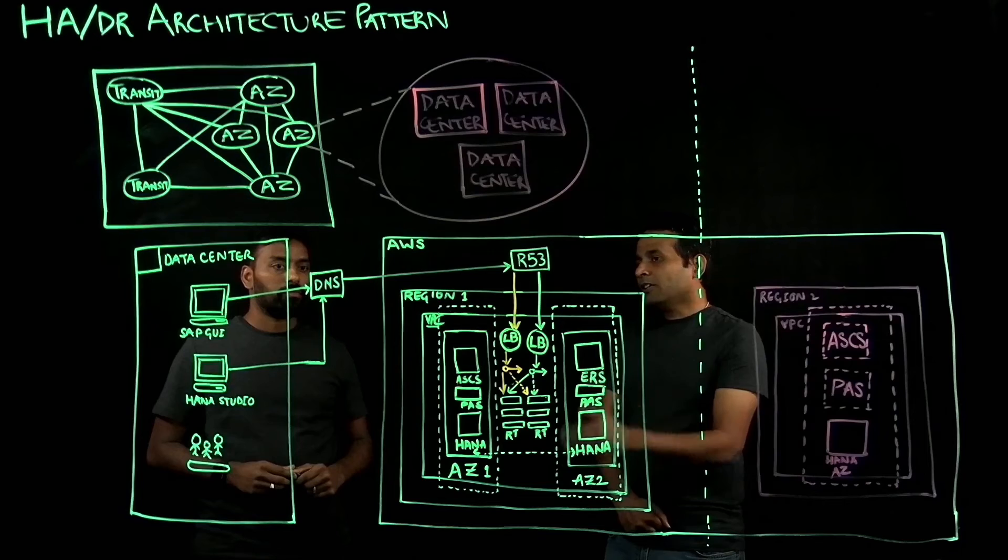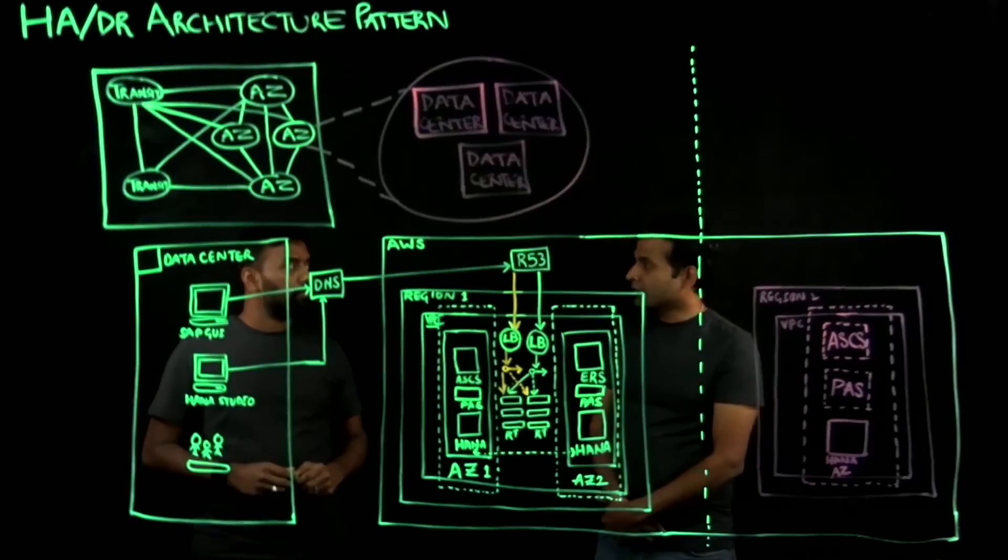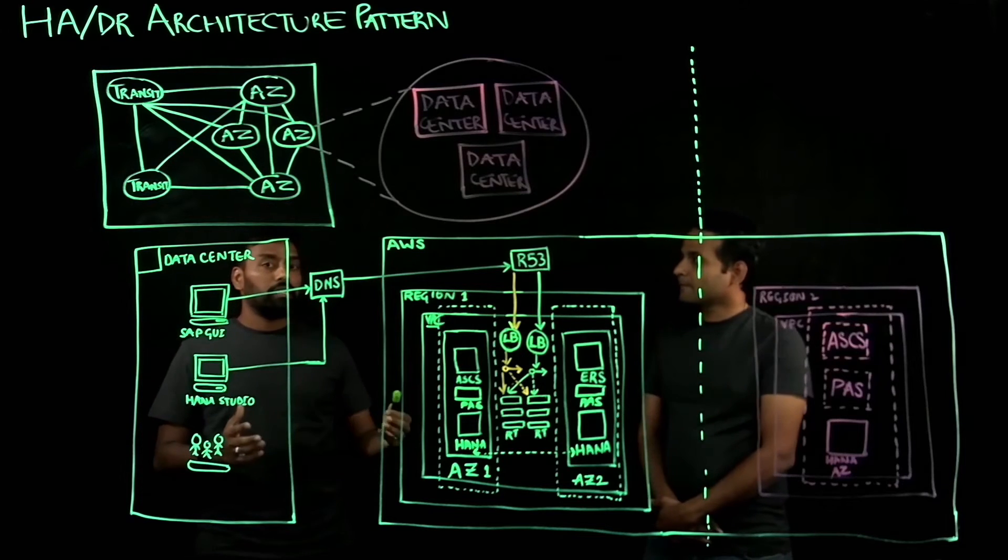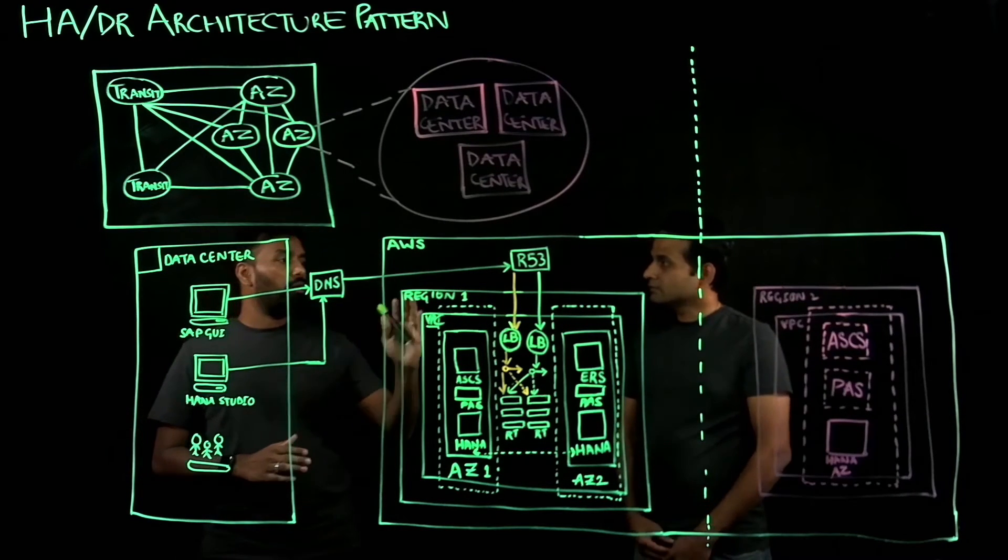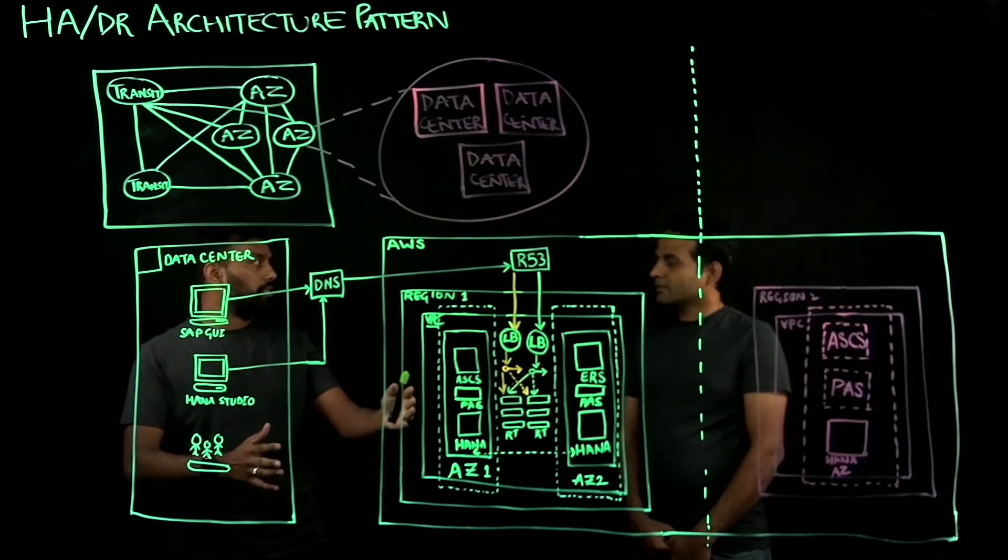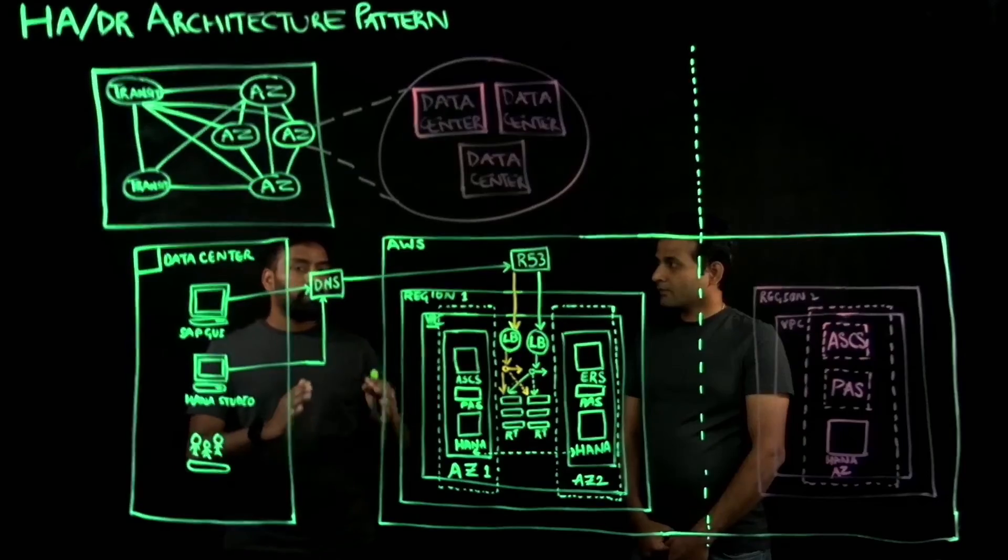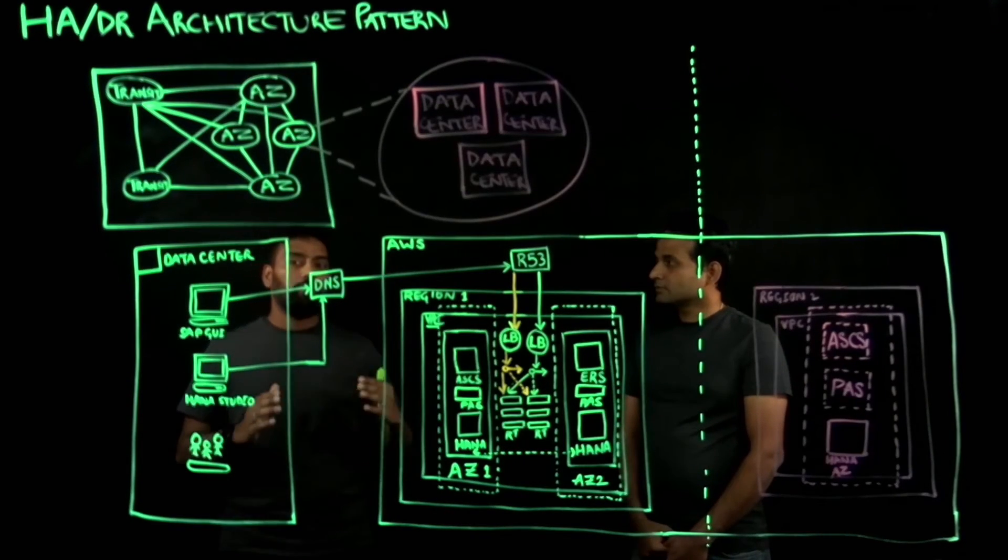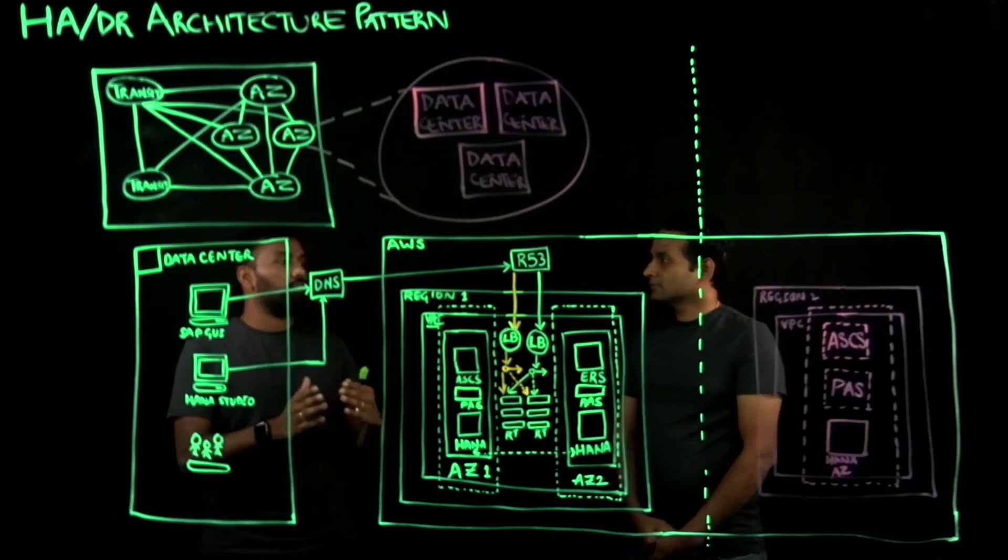One last question: what is your recommendation for customers looking to extend this and achieve or design a disaster recovery for their SAP workloads? Again, the same construct applies. Customers can leverage the AWS global infrastructure to achieve their business continuity goals. For example, customers can use a secondary region where they can provision their EC2 instances to run their SAP systems and HANA databases. If there is a natural disaster impacting your primary region, you still have your capability to recover your SAP systems in your secondary region. There are different DR patterns, like pilot light, warm standby, etc. We will create a separate video which will talk about these HANA-specific DR patterns and the operational aspects of achieving your business continuity goals.